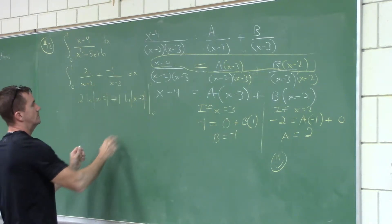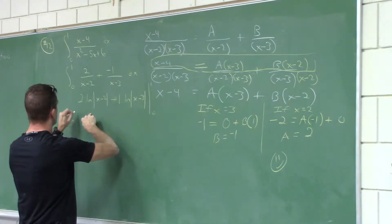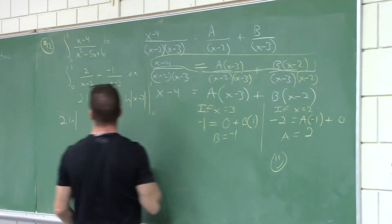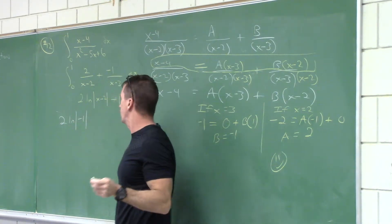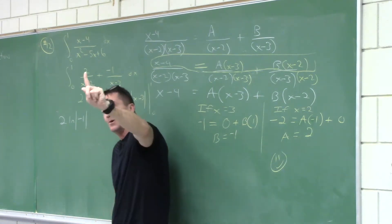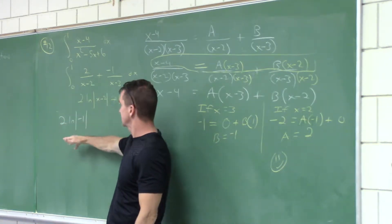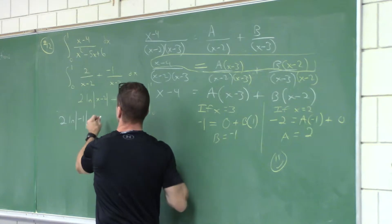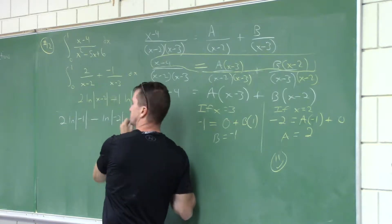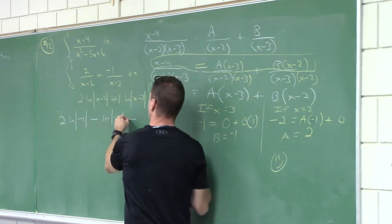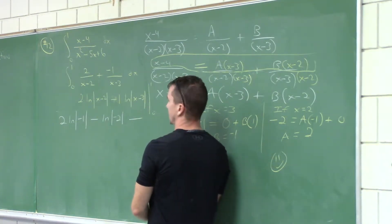That gives 2·ln|x-2| minus 1 times ln|x-3|. At x=1: 1 minus 2 is negative 1, absolute value is 1 — and the natural log of 1 is 0. Then subtract, also plugging in 0. Zero minus 3 is negative 3. The subtraction sign has to distribute everything.